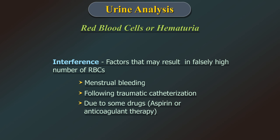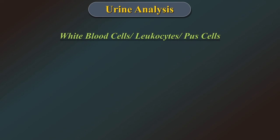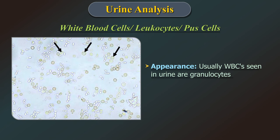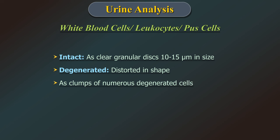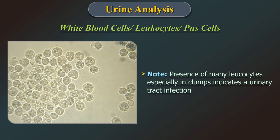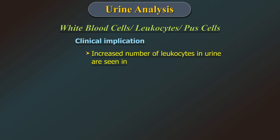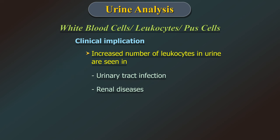White blood cells or leukocytes or pus cells: normal range is 0-2 white blood cells per high power field. White blood cells seen in urine are usually granulocytes, appearing as intact or clear granular discs of 10-15 microns, or degenerated in shape or as clumps of numerous degenerated cells. The presence of many leukocytes, especially in clumps, indicates a urinary tract infection. Increased number of leukocytes in urine are seen in urinary tract infection, renal diseases and bladder tumour.